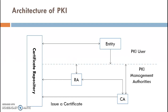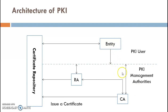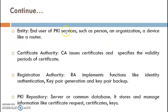The architecture of PKI consists of four main entities: Entity, RA (Registration Authority), CA (Certification Authority), and Certificate Repository. The Entity is the PKI user, whereas the other three — RA, CA, and Repository — are PKI management authorities involved in the registration and issuance of certificates. The end user of a PKI service, such as a person, an organization, or a device like a router, is referred to as an Entity.